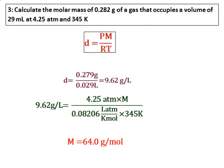I calculated the density, pressure is given, it is in atmosphere, molar mass has to be calculated, R we know the value and the kelvin temperature is already given and hence the molar mass can be calculated. The molar mass comes as 64.0 grams per mole.